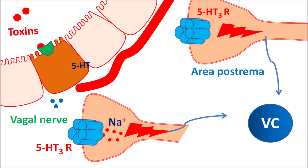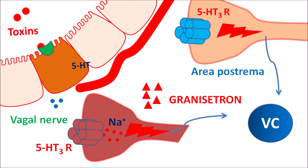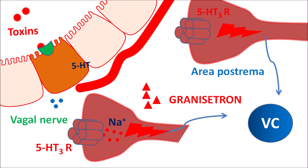Thus, 5-HT3 receptors play a key role in the induction of nausea and vomiting at vagal nerves and at the CTZ, particularly at the area postrema. Granisetron is a selective antagonist for 5-HT3 receptors; it blocks these receptors at vagal afferent neurons and at the area postrema, inhibiting both the vagal activation and CTZ activation, thereby reducing chemotherapy- and radiation-induced nausea and vomiting.